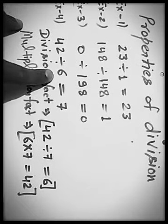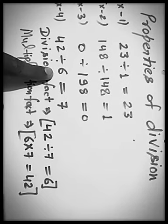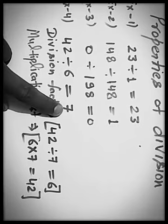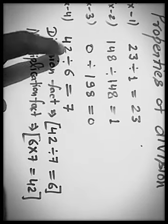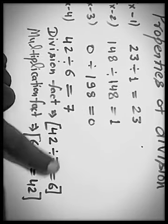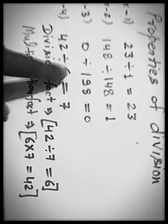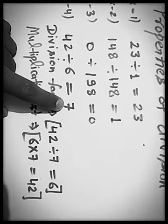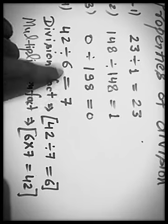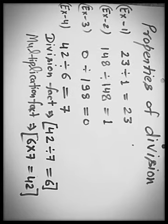Now, next property. Every division sum has a division fact and a multiplication fact. See, 42 divided by 6 is equals to 7. You know that? 6 sevens are 42. So if we divide 42 by 7, it means by this quotient, then we will get divisor. So this is called division fact. If we multiply this divisor and this quotient, then we will get dividend. 6 sevens are 42. So this is called multiplication fact. These are the properties of division.